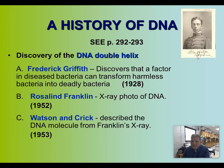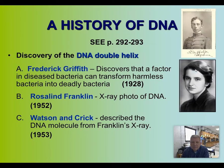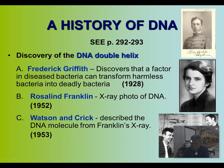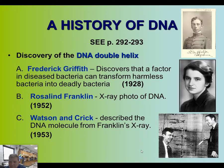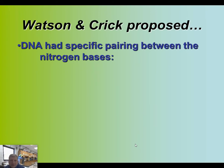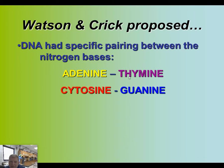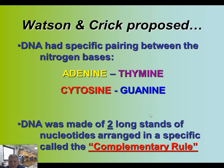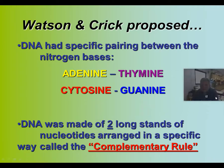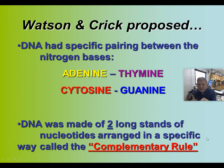We can see a picture of Frederick Griffith, Rosalind Franklin, and Watson and Crick, with their DNA structure in the center. Watson and Crick proposed that DNA had specific pairing between the nitrogen bases: adenine with thymine, and cytosine with guanine — always A-T and C-G. DNA is made of two long strands of nucleotides arranged by the complementary rule, meaning the number of A's always matches T's, and C's always match G's.